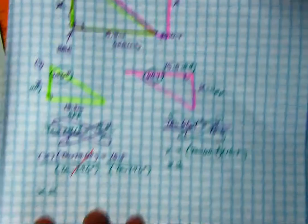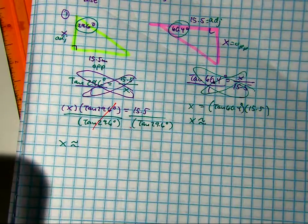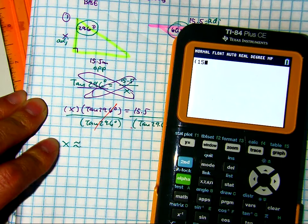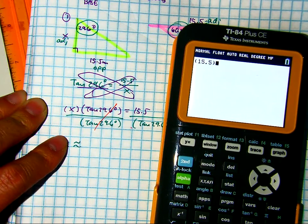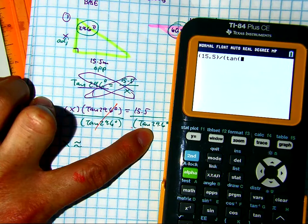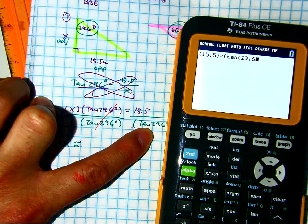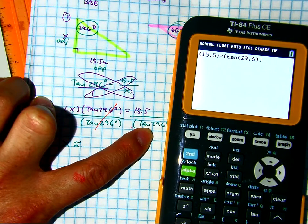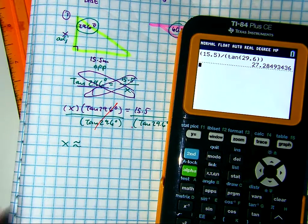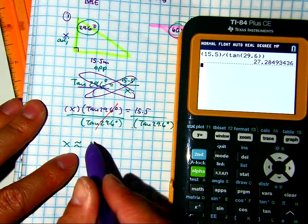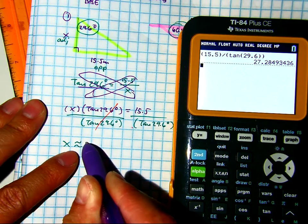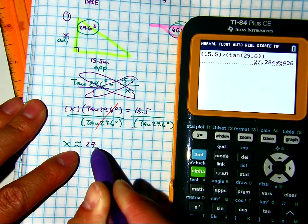Let's put that in there. Extra set of parentheses, 15.5 divided by open parentheses, tangent 29.6. The worst thing you can do tomorrow in your quiz is to come up to me and ask me, is this what you do in your calculator? And I would say, I don't know. Because we're telling you how to do that right now. So if you round to the nearest tenth, what do you get, class? 27.3 meters. Box my answer.